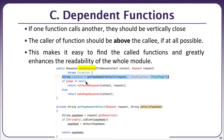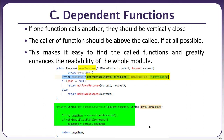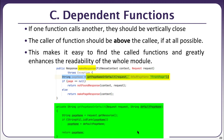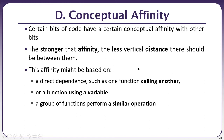For dependent functions — for example, a method called makeResponse that internally calls another method getPageNameOrDefault — that called method should be defined immediately after makeResponse. The caller of a function should always be above the callee if at all possible. This makes it easy to find the called functions and greatly enhances the readability of the whole module.